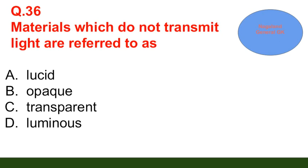Question number 36: Materials which do not transmit light are referred to as — option A: lucid; option B: opaque; option C: transparent; option D: luminous. The correct answer is option B — opaque.